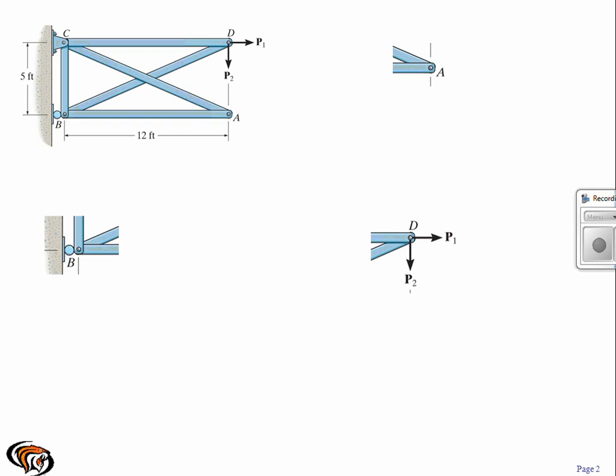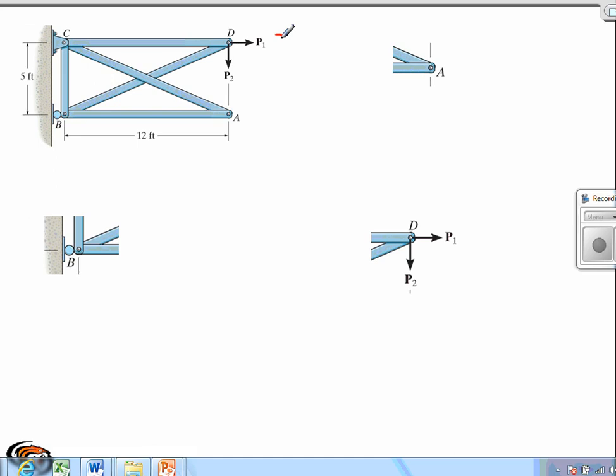So first thing we want to do is, this is 240 pounds and P2 is 100 pounds. The free body diagram for A, we have a force from A to C, and we also have a force from A to B.